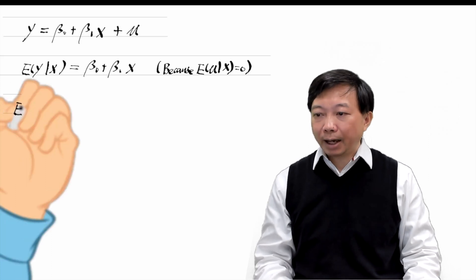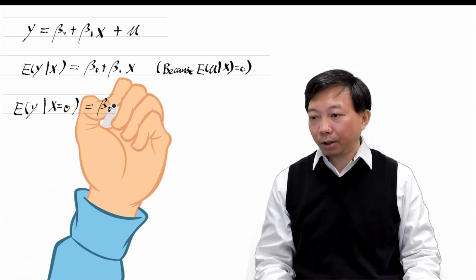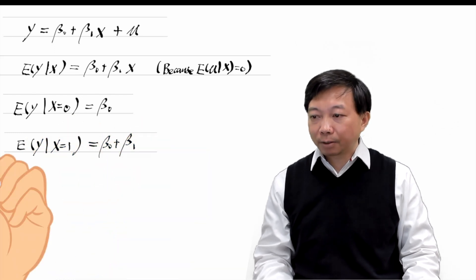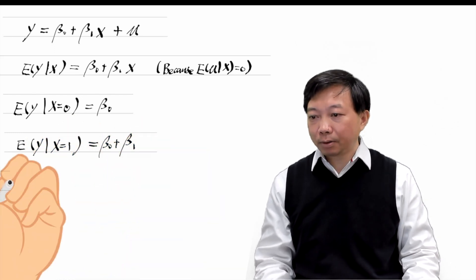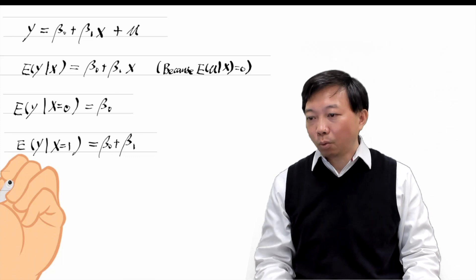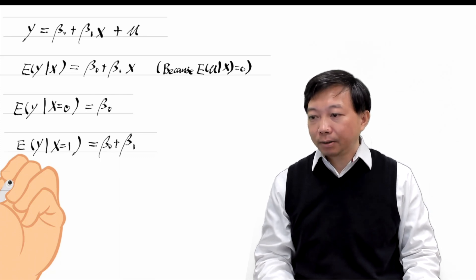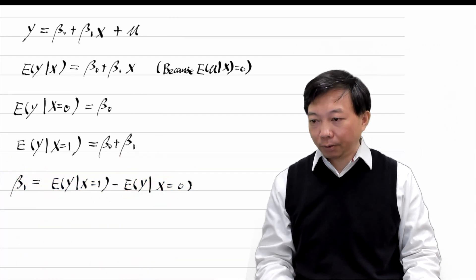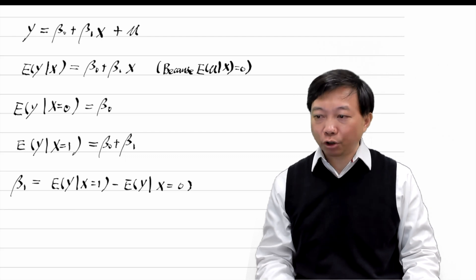Since x only takes on two values, when it is zero, the expectation of y is beta 0. When x is 1, the expectation of y is beta 0 plus beta 1. Beta 1 equals the difference between the two expectations.